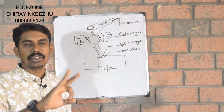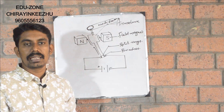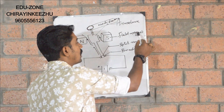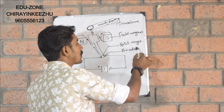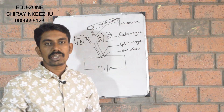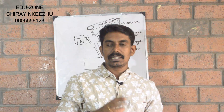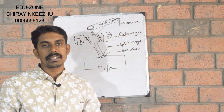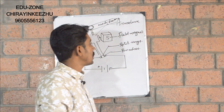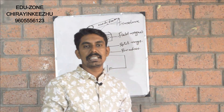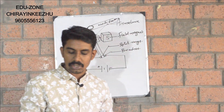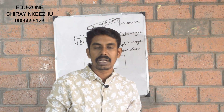An electric motor converts electrical energy into mechanical energy. Electric energy into mechanical energy. These are important parts. The parts are armature, field magnet, split ring commutator, and brushes. These are the main elements of the electric motor.